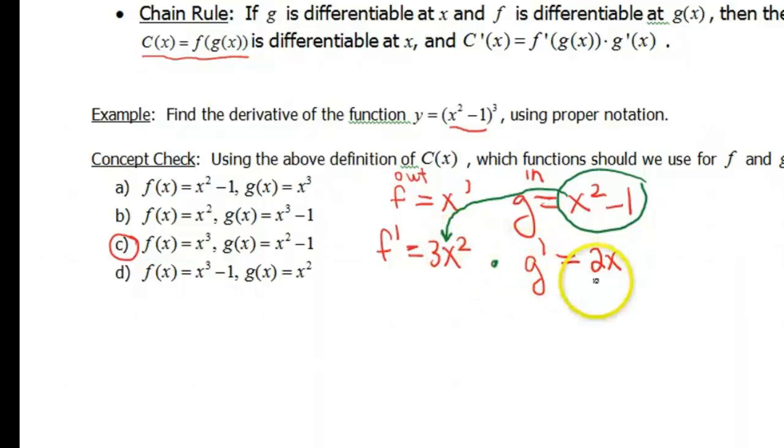Then we're going to multiply by the derivative of the inside, which is 2x. So how will those pieces go together then? It's just following the chain rule up here.